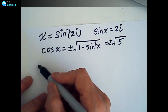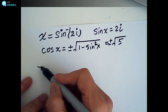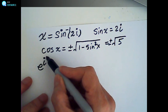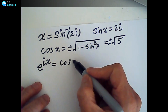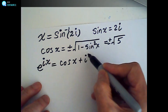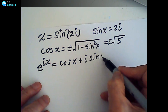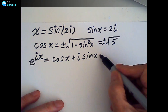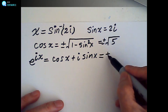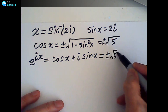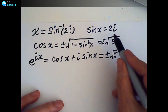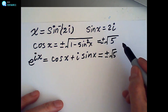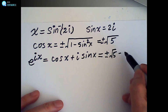Therefore, e to the ix, which is equal to cosine x plus i sine x, equals plus or minus √5 plus i times 2i. Since i times 2i equals -2, this gives us plus or minus √5 minus 2.